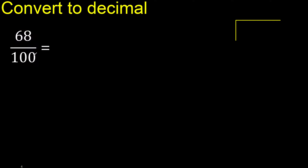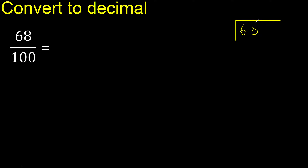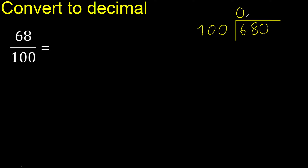68 divided by 100. 68 is less, therefore complete with 0. Here: 0 point.